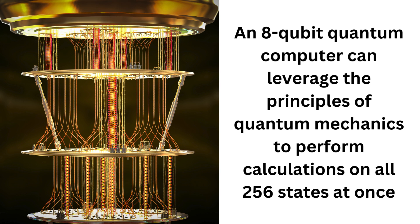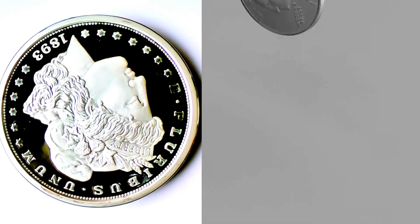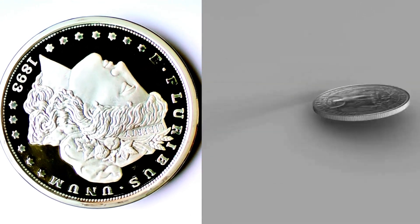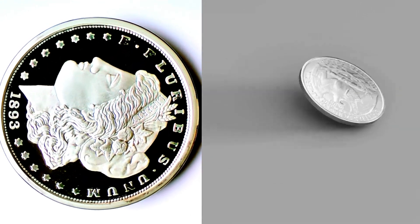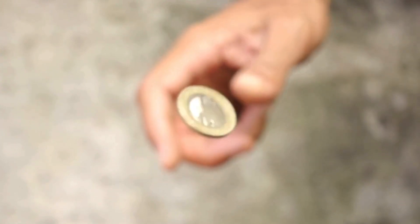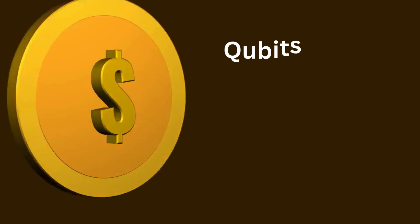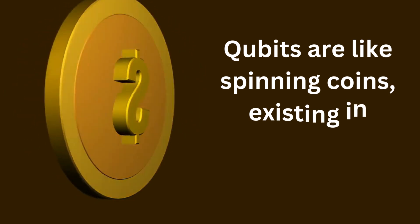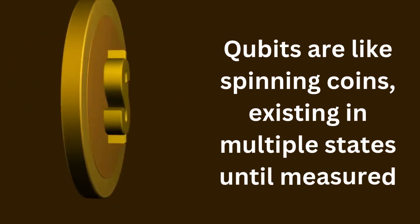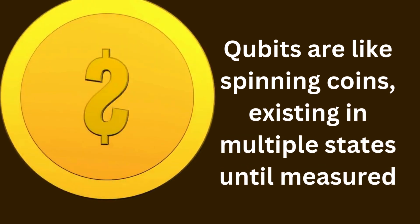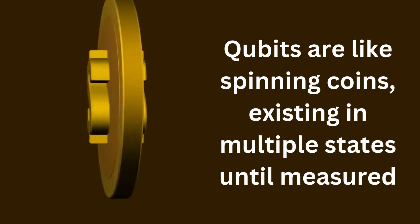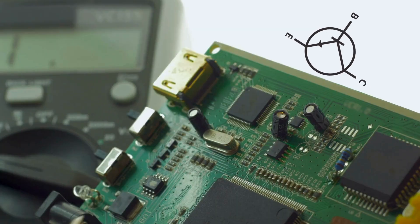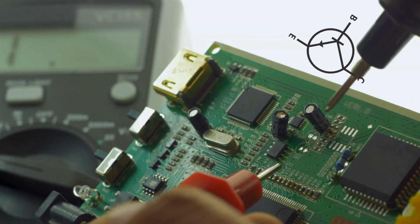Imagine a coin — it can only be heads or tails. Now imagine a spinning coin. While it's spinning, it's in a superposition of states; it's both heads and tails until it stops. Qubits are like spinning coins, existing in multiple states until measured.